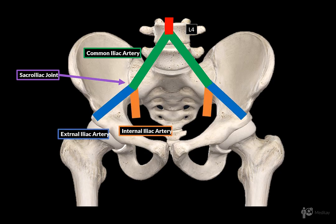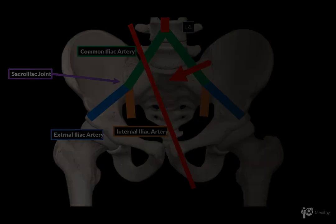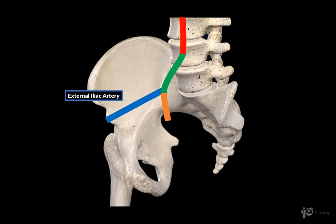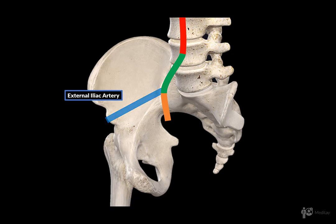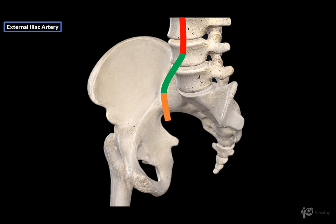Now let's make a cross section and look at them both from this perspective to visualize them easier. From here we can finally focus on the external iliac artery, but first let's look at some important structures it goes through.